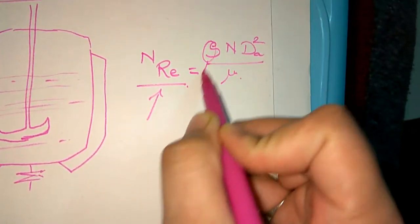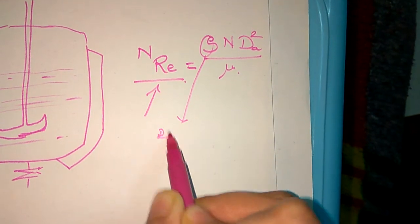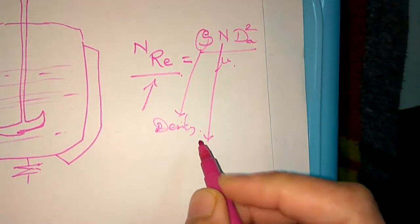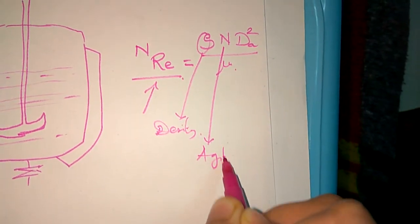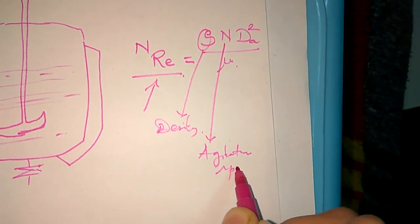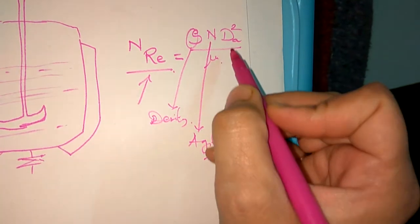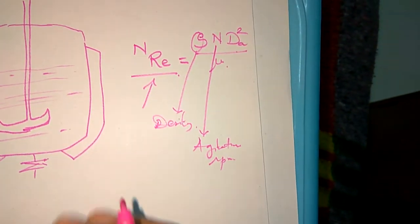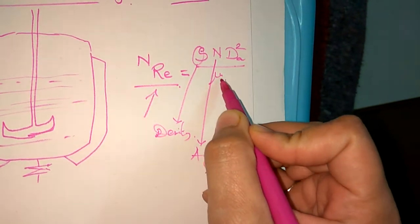Now what are the significance of all the terms? This is Reynolds number. This rho is the density. This N is the agitation RPM.